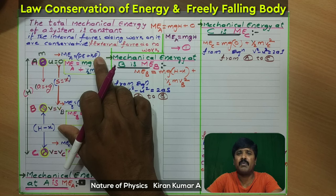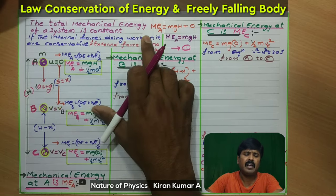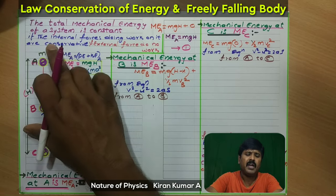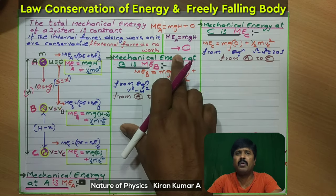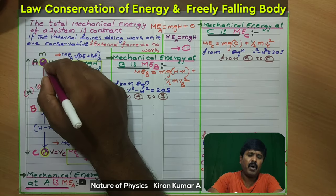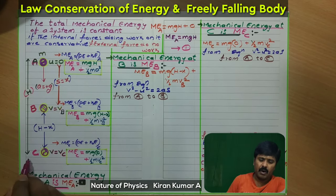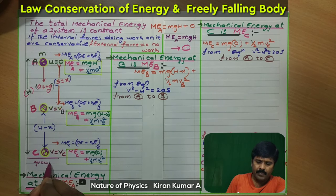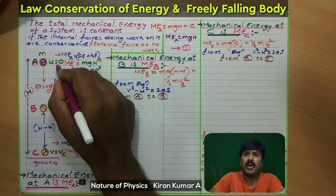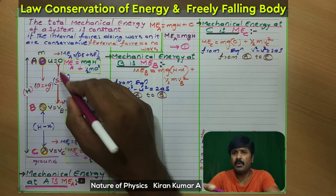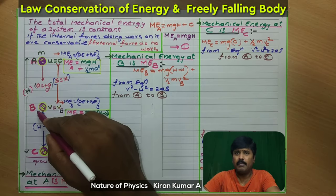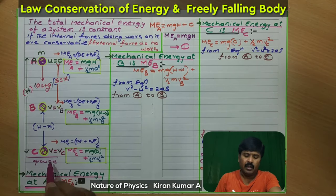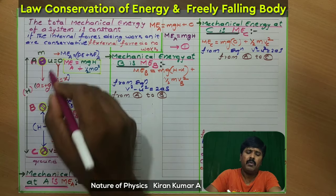Energy can transfer from one form to another form. Here we are considering mechanical energy. The total mechanical energy of the system is constant if the internal forces doing work on it are conservative and external forces do no work. We are considering a ball of mass m at a height h from the ground, with initial velocity equal to zero for a freely falling body. We are going to find the mechanical energy at point A (highest point), point B (midpoint), and point C (ground level).